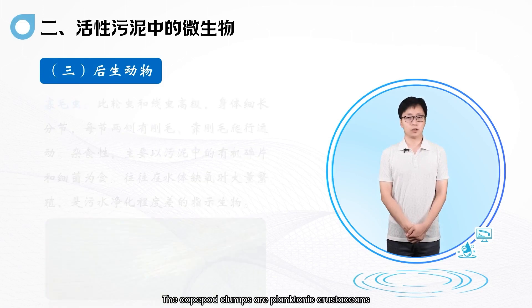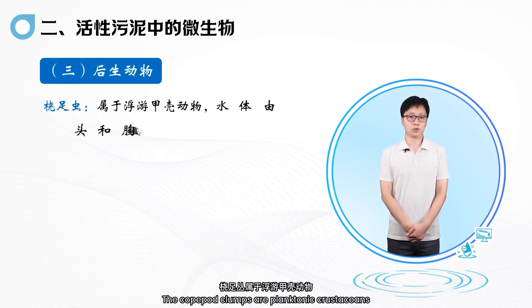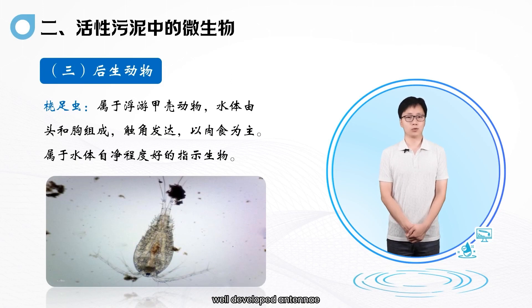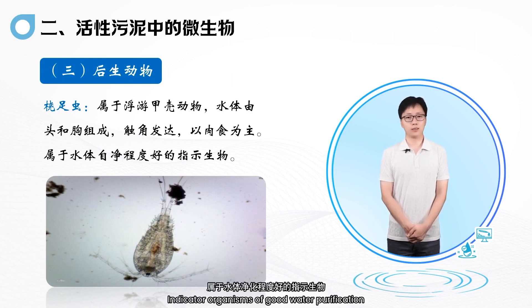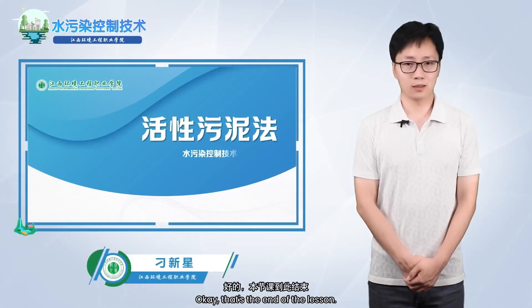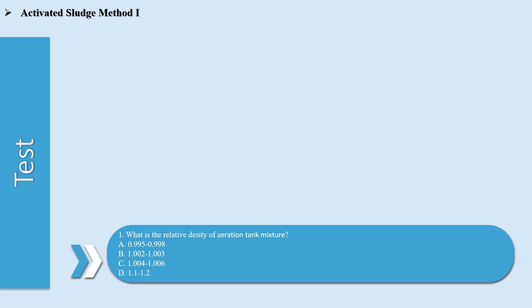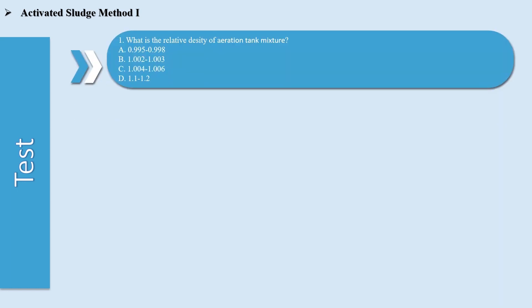Copepod clumps are planktonic crustaceans. The body consists of the head and chest, with well-developed antennae. They are carnivorous and serve as indicator organisms of good water purification. That's the end of the lesson. Thank you.